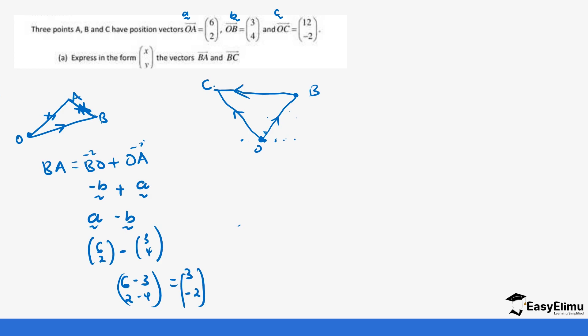So we are looking for BC. For us to get BC, the direction means we need to go to BO plus OC. And remember we said OB is represented by B and OC is represented by C. So if we look at BO, the opposite becomes -B. And then if we take OC, it becomes C. So this is the same as C minus B.